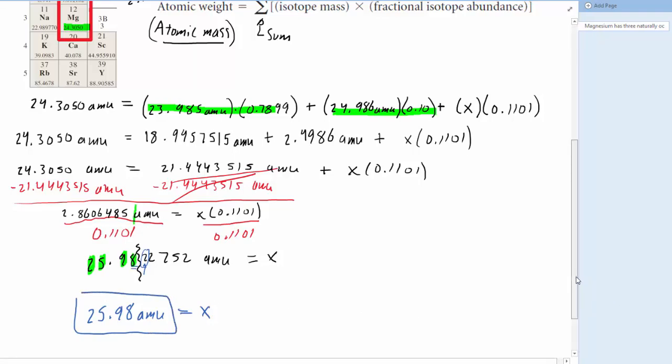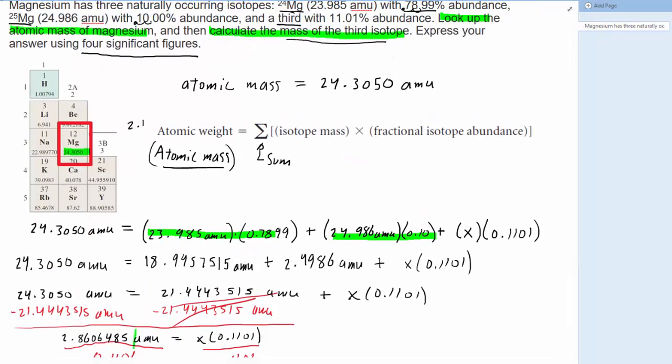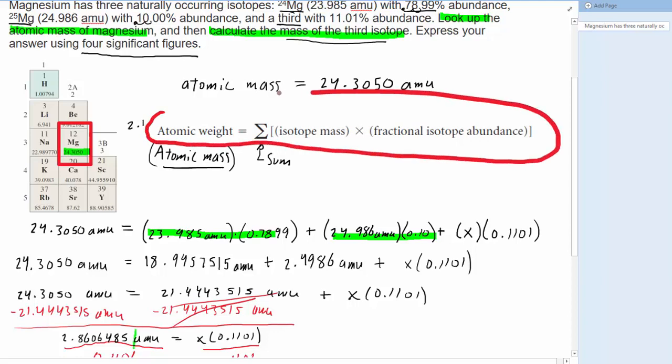And so the key really was knowing the relationship between the atomic mass of the element and its isotopes and their mass. So this is the expression that you would really want to take away from this question here.